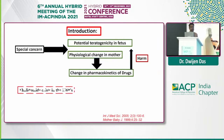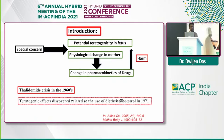We know two important historical events. One is the thalidomide crisis that occurred in 1960, and another is the effect of diethylstilbestrol, which occurred in 1971.